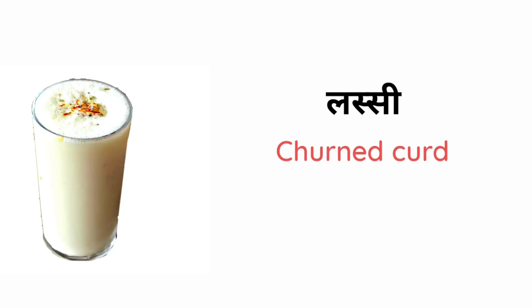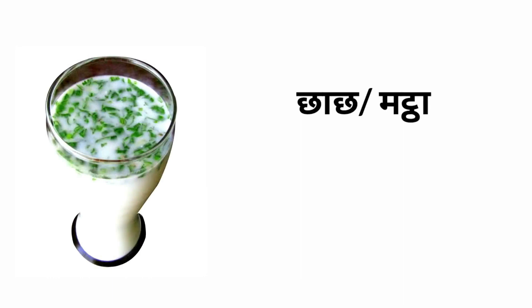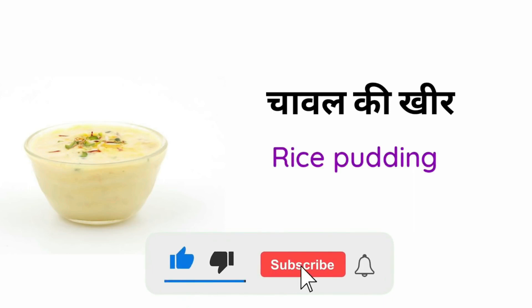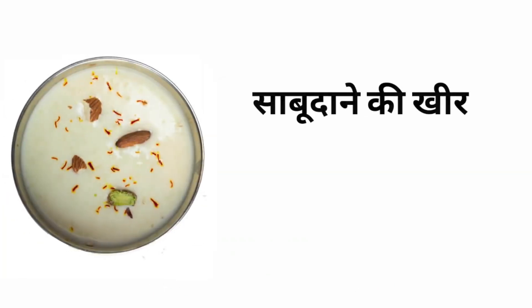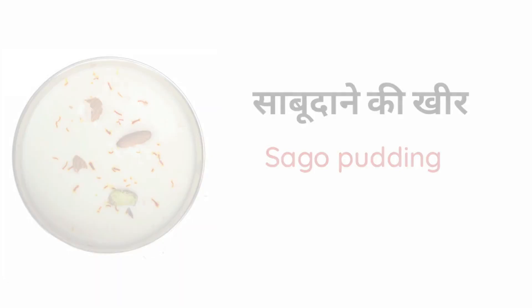Churned Curd — Chaj. Rice Pudding — Saabodana Ki Kheer. Saigo Pudding — Khichdi.